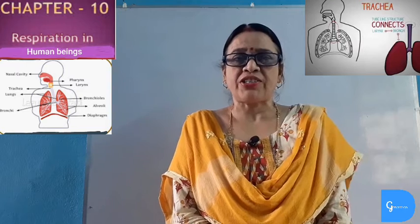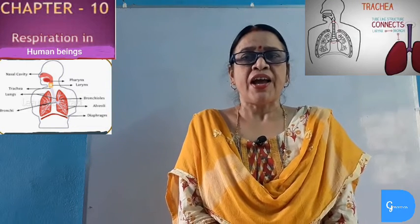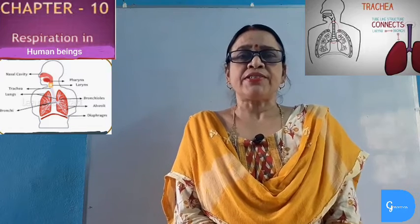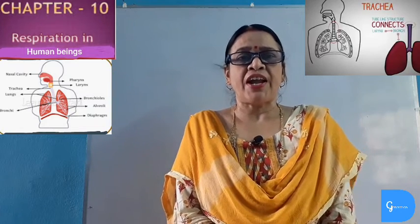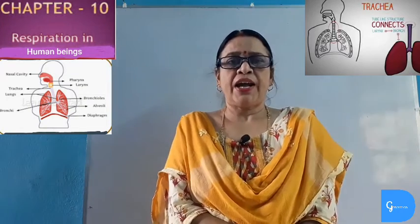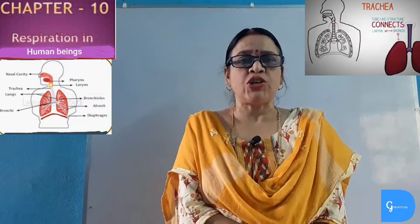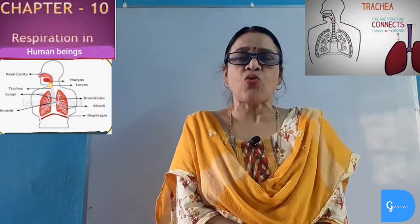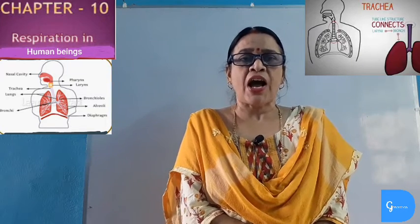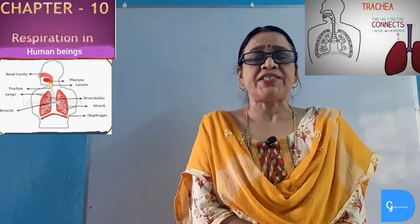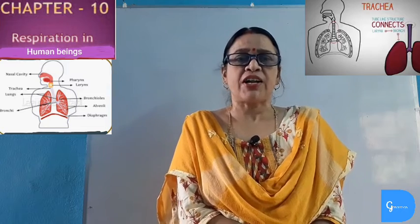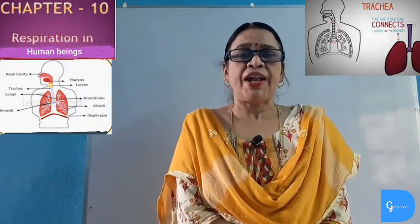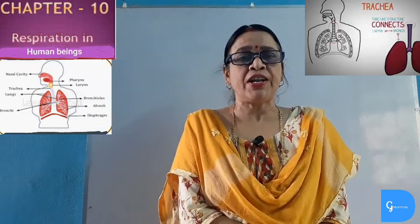Next comes the trachea, or windpipe. Trachea is a hollow tubular structure that starts from the pharynx and ends in the middle of the thoracic cavity, serving as a passage for entry and exit of respiratory gases. At the end, the trachea divides into two branches known as bronchi. Each bronchus enters into the lung on its own side. The trachea and bronchi are supported by C-shaped cartilaginous rings, which prevent them from collapsing when negative pressure is developed during inhalation.